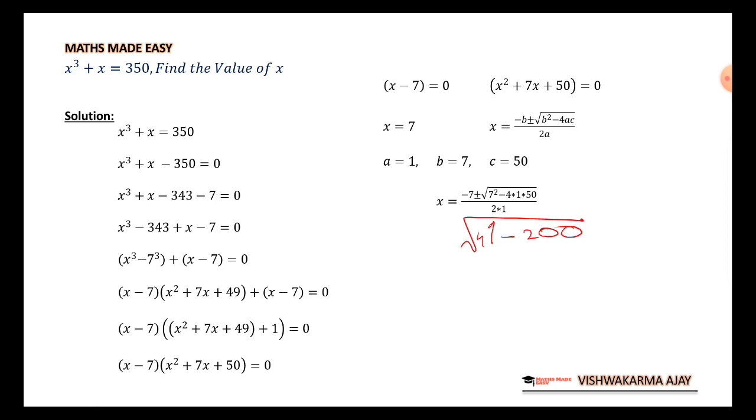Inside the root, we are going to get a negative number. Either you can stop your work here by saying that this quadratic equation has no real roots. So, the only solution to this cubic expression is x is equal to 7. Because the roots that you are going to get by solving this part is not a real root. It's an imaginary root. It's an imaginary solution for this expression and we need a real solution.